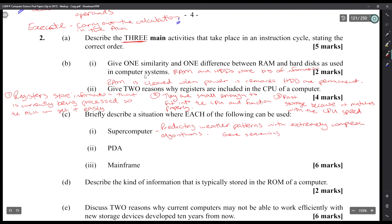Briefly describe a situation where each of the following can be used. One is a supercomputer. Supercomputers are used, most of the time the answer will be scientific calculations, DNA sequencing, predicting weather patterns with extremely complex algorithms, gene sequencing, artificial intelligence, such and such.